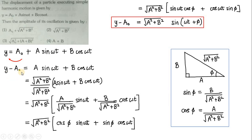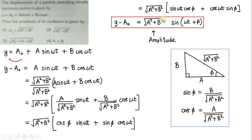On the left-hand side we have y − a₀, and on the right side we have √(a²+b²)·sin(ωt + φ). Since the maximum value of the sine function is +1, the maximum value of the right-hand side is √(a²+b²) × 1 = √(a²+b²). Amplitude means the maximum displacement of the particle, so √(a²+b²) is the amplitude of the given SHM.